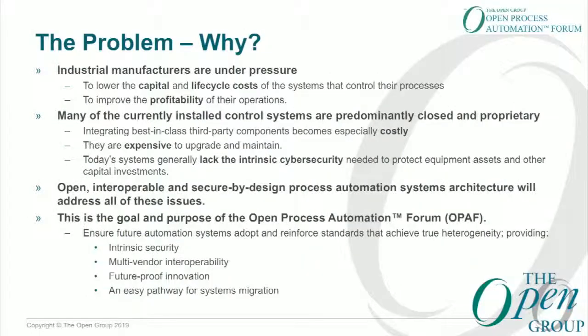Industrial manufacturers are under pressure to improve the profitability of their operations. Many of those systems are predominantly closed and proprietary — today you can't mix devices on the same control bus, and integrating third-party components becomes costly. This typically happens at a much higher level in the ISA-95 or Purdue model stack through IT-like systems where the latencies and determinism are much slower. It's expensive to upgrade and maintain those systems, and there's generally a lack of intrinsic cybersecurity throughout — it's usually patched. As everybody knows, there are enough security threats in the news on a daily basis that no system stays secure for very long.